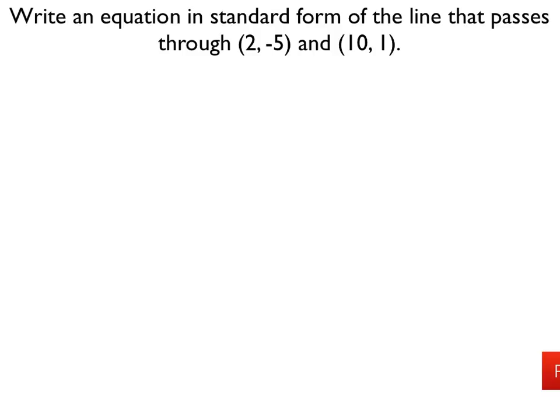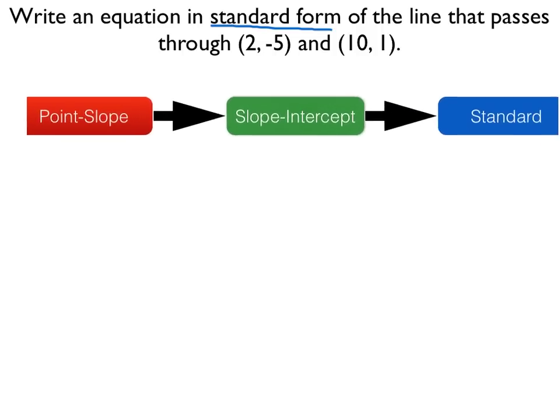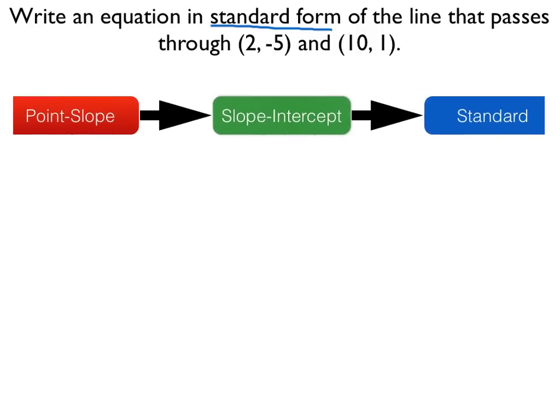Here we've got another example where we want to find the equation of a line in standard form. However, we're given just two points. The usual technique that we've used in previous examples is start with point-slope form, using algebra change that to slope-intercept form, and then finally using algebra once again get that into standard form.